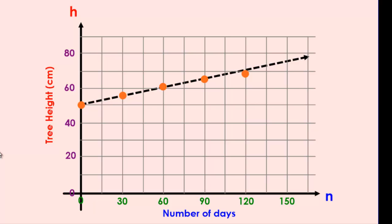This graph is also an example of a partial variation. A partial variation is a linear graph where our first point isn't at the origin. In this case, our first point is up the h-axis. An example of a direct variation graph could look different — a direct variation line has its initial value at the origin, whereas our graph has an initial value above the origin.